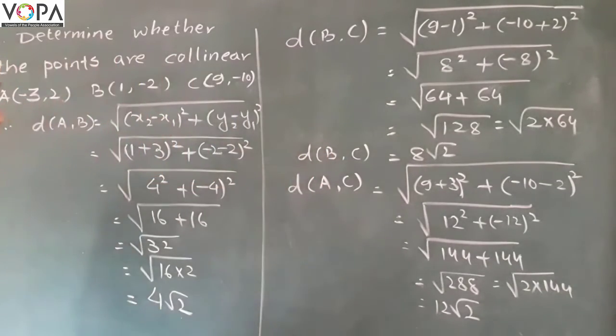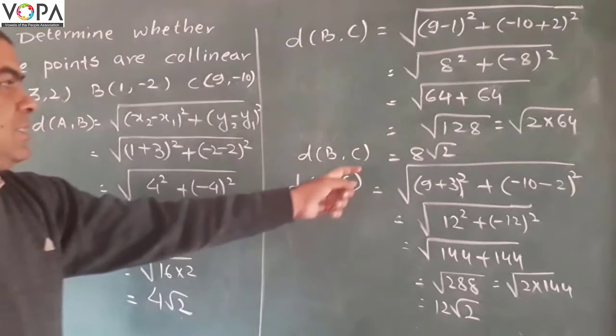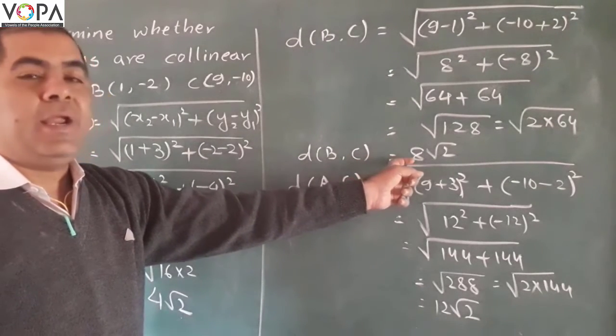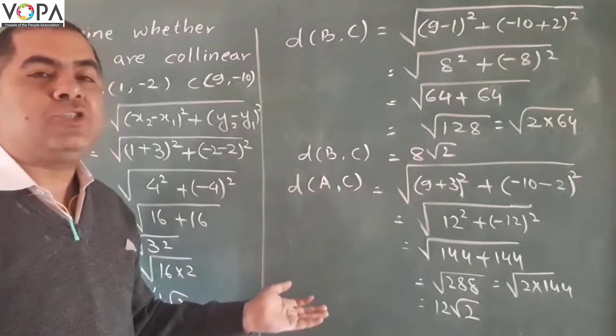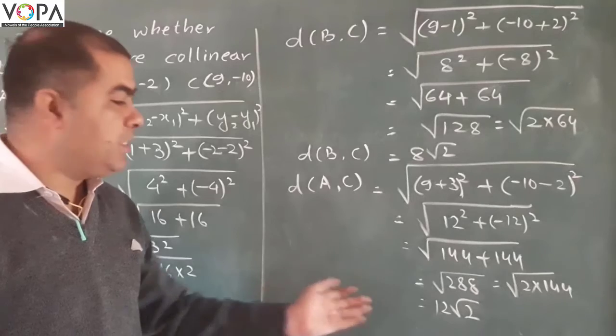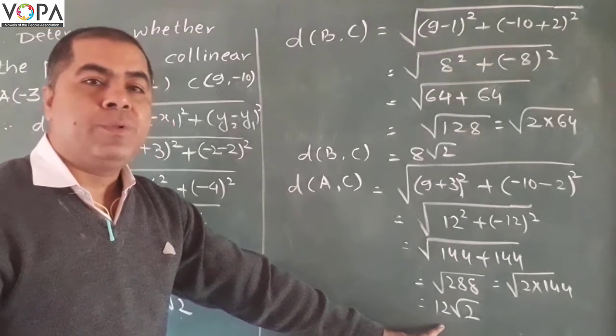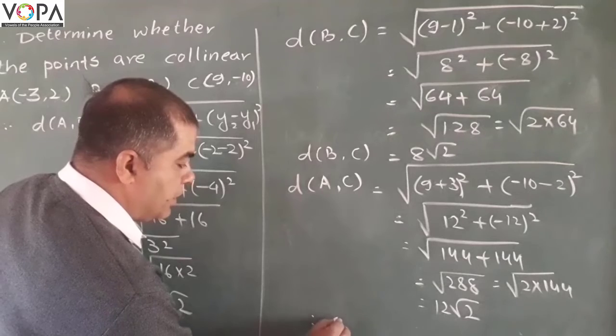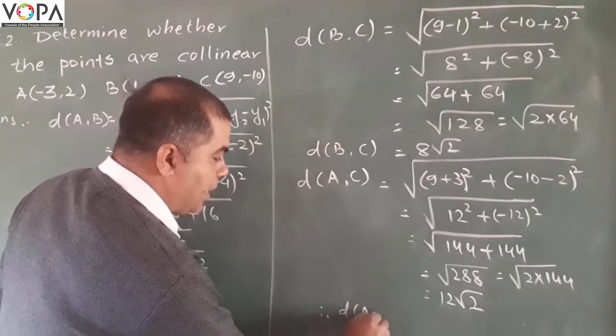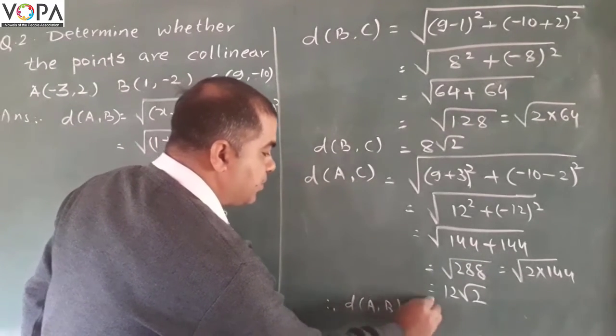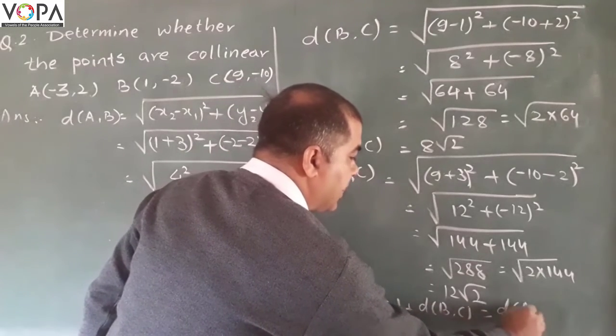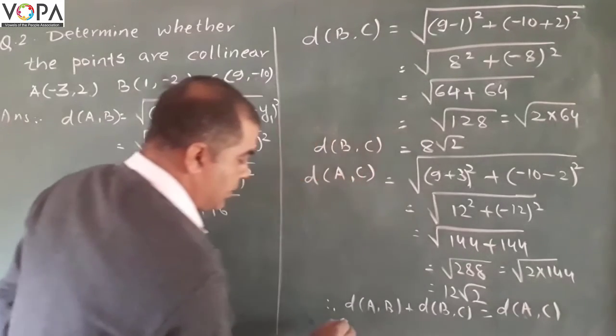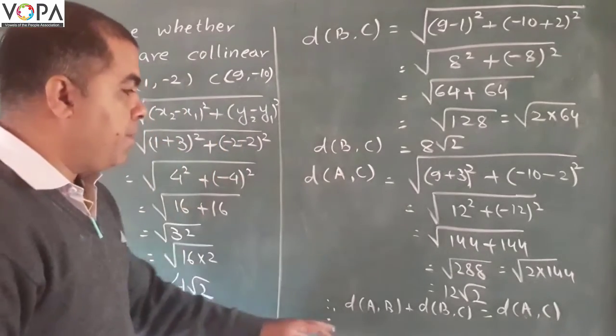Now see the distances: distance AB is 4 root 2, distance BC is 8 root 2. The sum of these two distances is 12 root 2, which means distance AB plus distance BC is equal to distance AC.